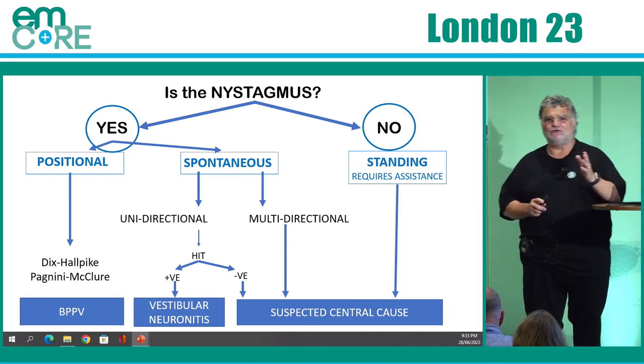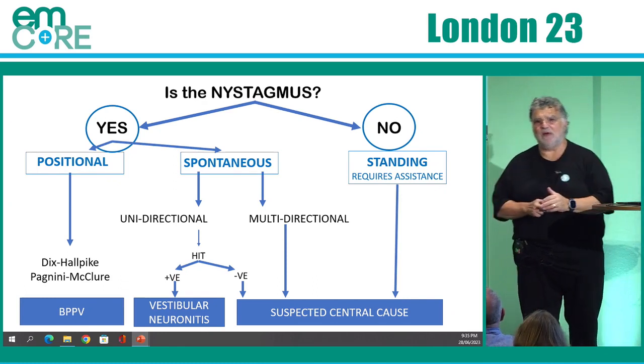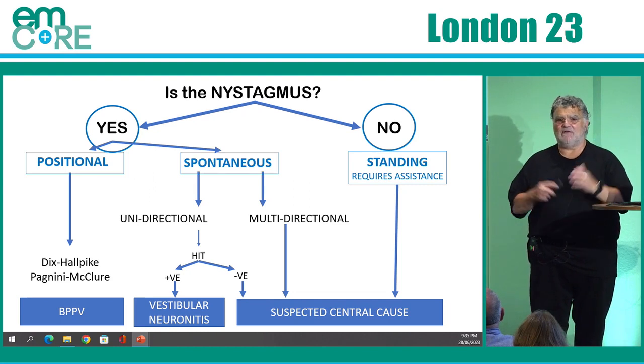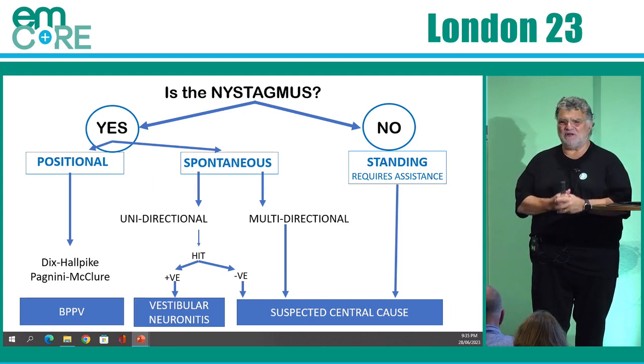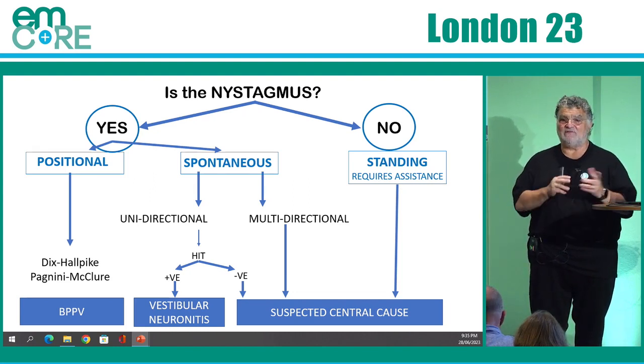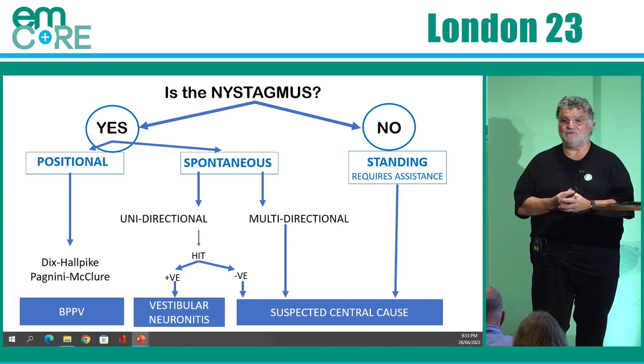If the spontaneous nystagmus is unidirectional, you can do a head impulse test on the patient. If it's positive, it usually points to vestibular neuronitis. If it's negative, you've got to go down the road of a stroke.